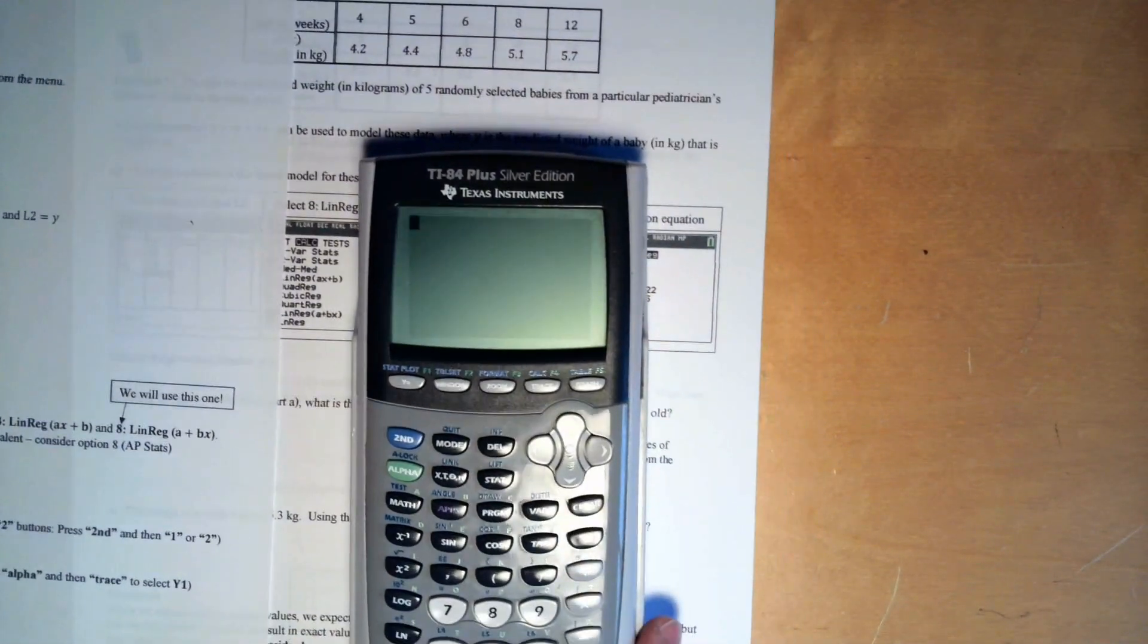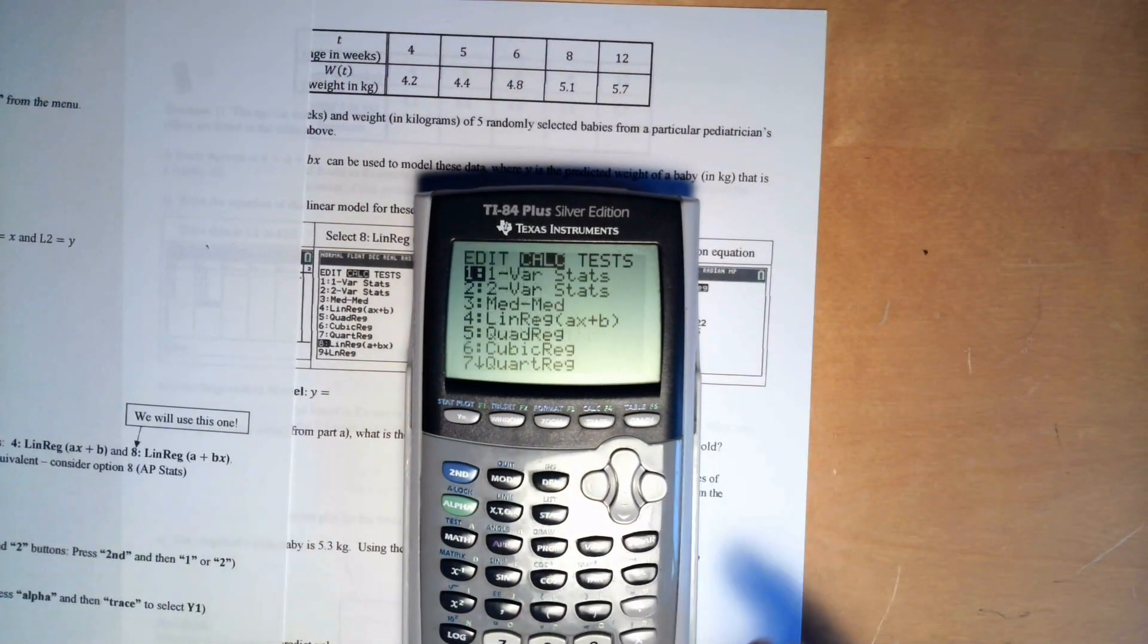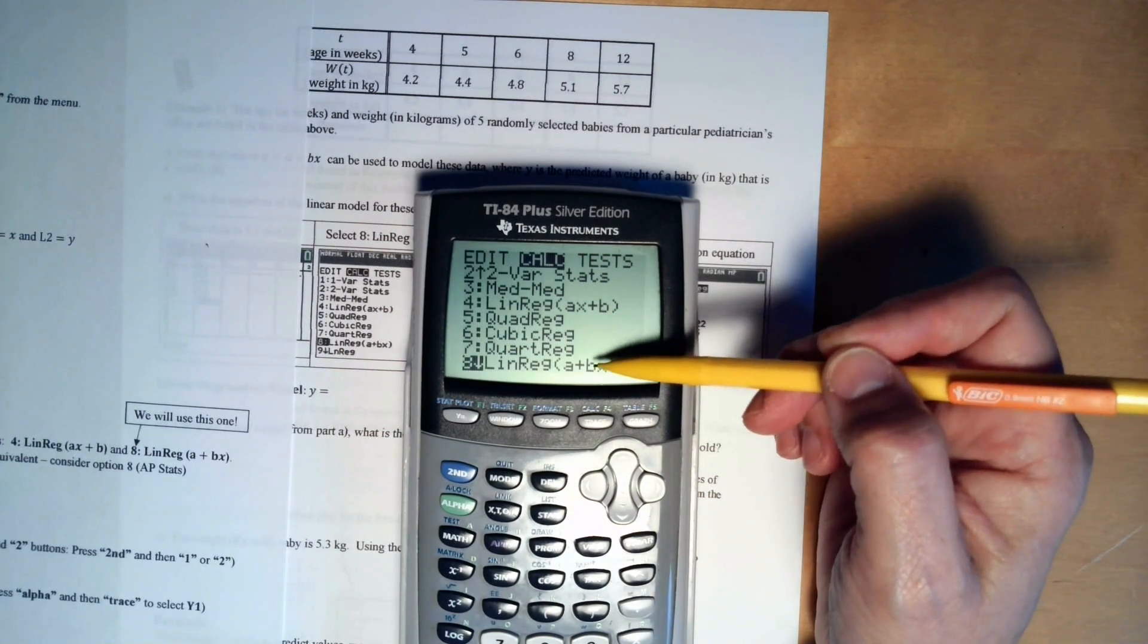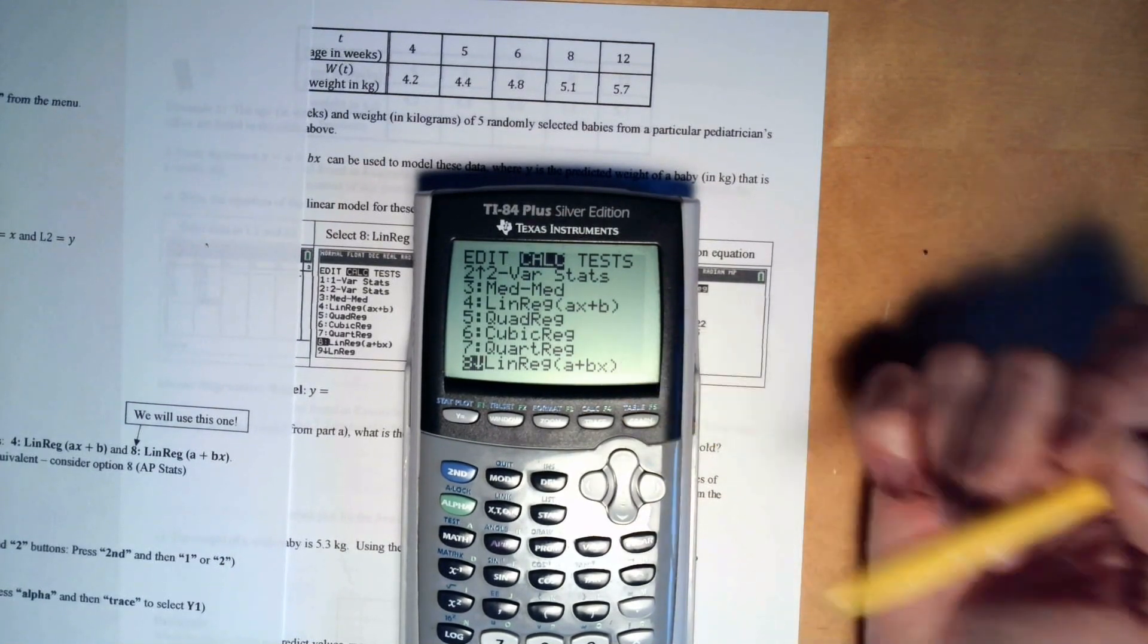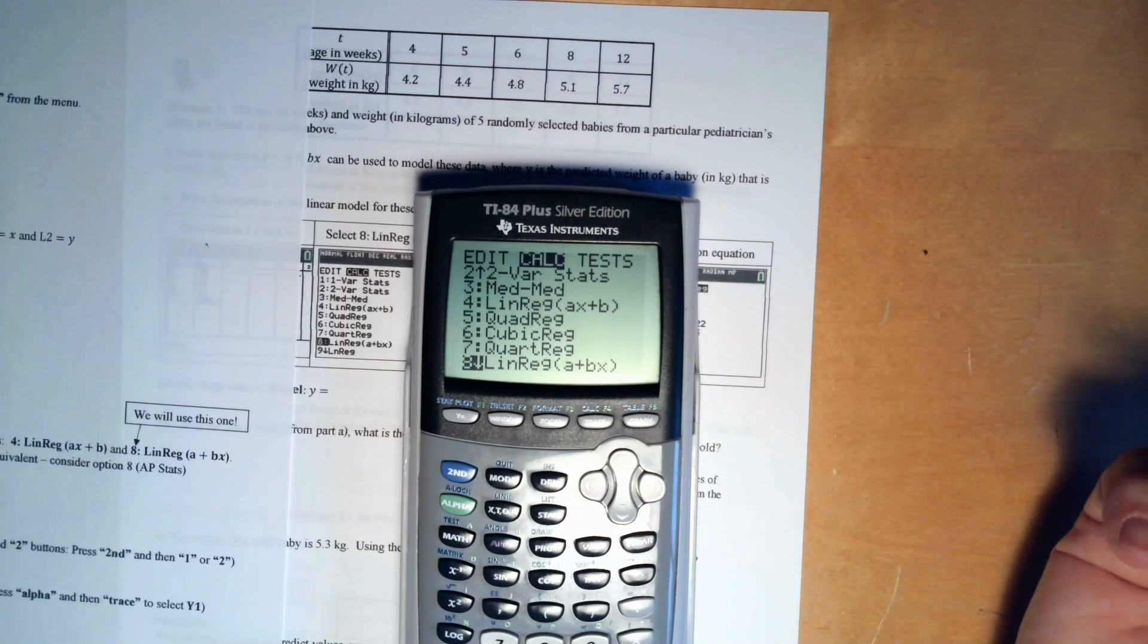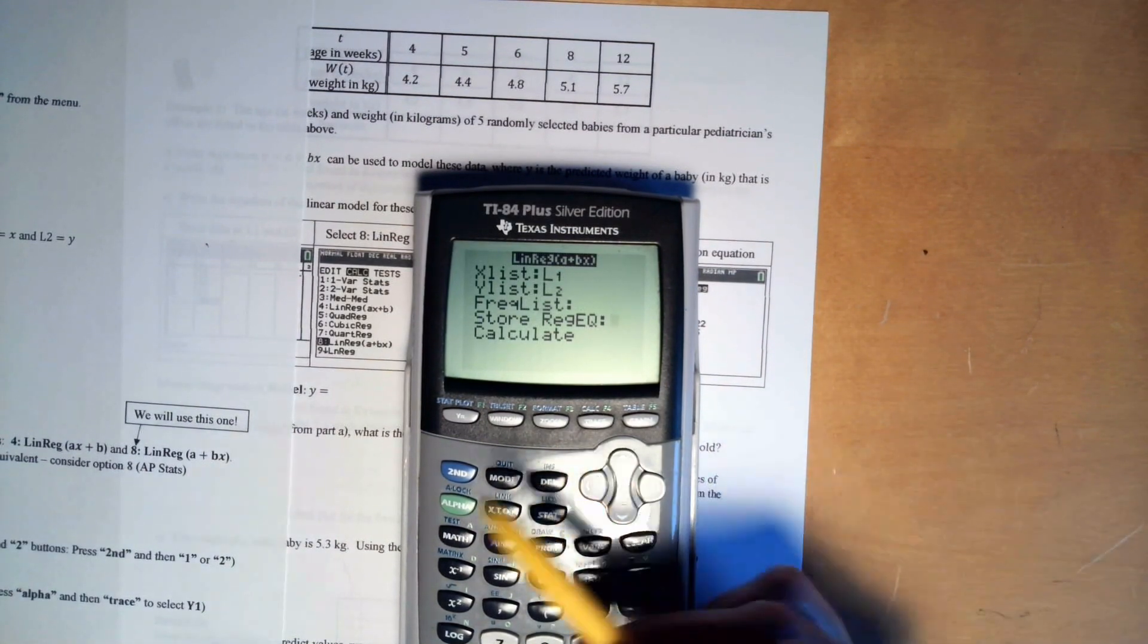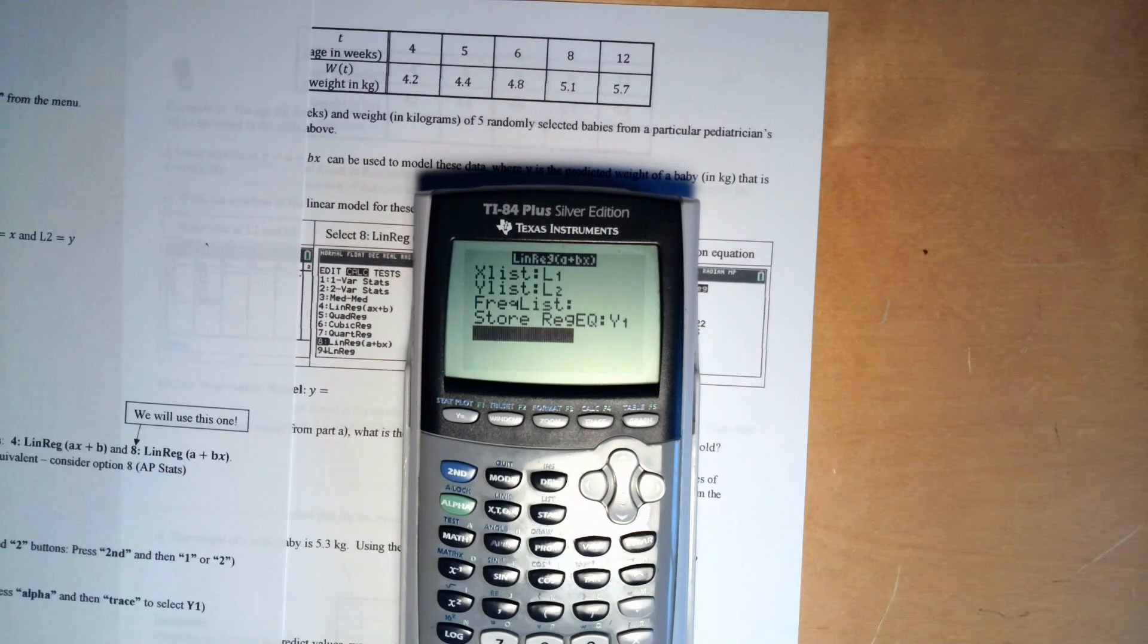So I'm going to quit out of here back to my main screen. To do a linear regression, you're going to want to press the stat button again, but this time you're going to go over to calculate. And we used to use number four. Number four and number eight are really the exact same thing. It's just a matter of where the y-intercept is located. And Mr. Oliver tells me that in AP stats they like number eight better. So we're just going to use that one. So anyway, number eight.